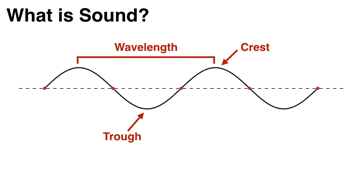They have a wavelength, which is the distance from a particular crest to the next one. They have an amplitude, which is the distance from the center line to the top of a crest or to the bottom of a trough.